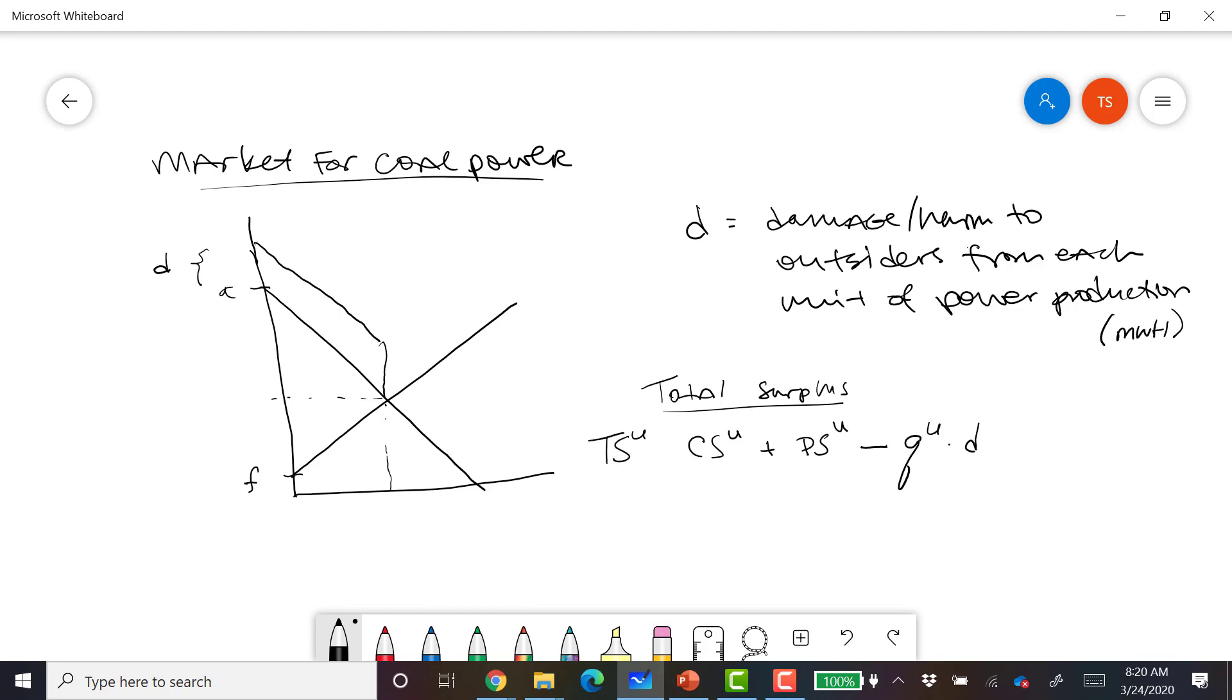So this is the total surplus in the unregulated case. Consumer surplus plus producer surplus minus the quantity times D. U is for unregulated. Okay? These prices and quantities are no longer optimal. Okay, these were P star and Q star, right, for the midterm.